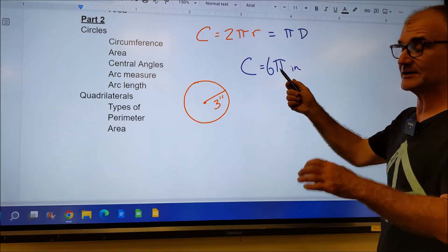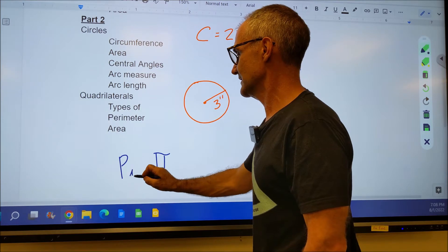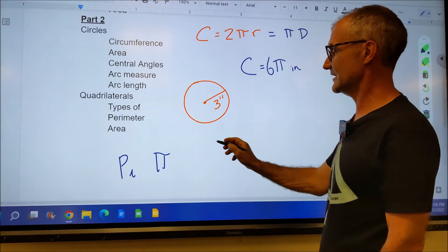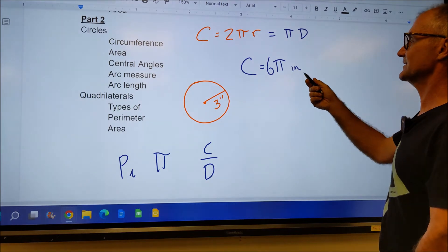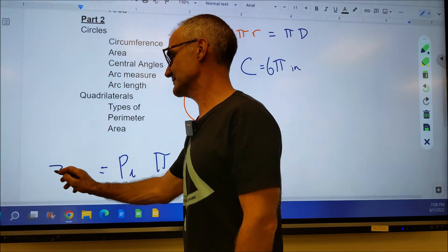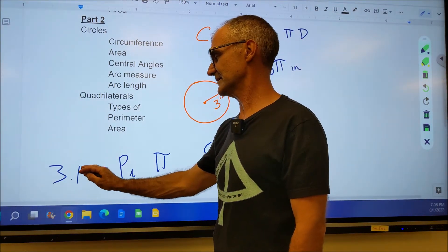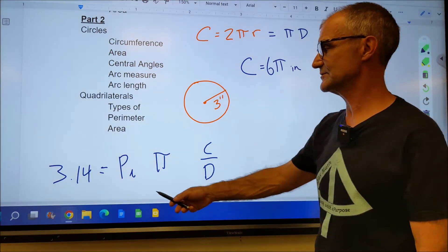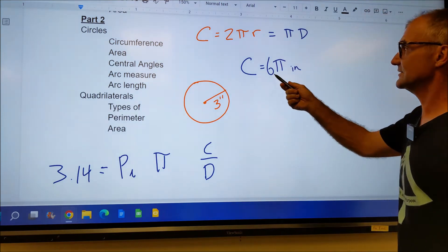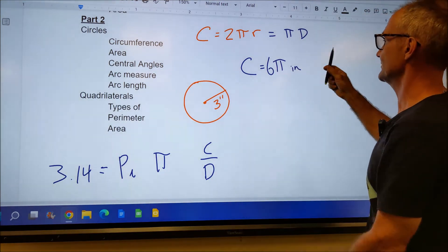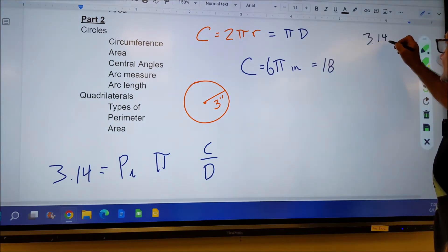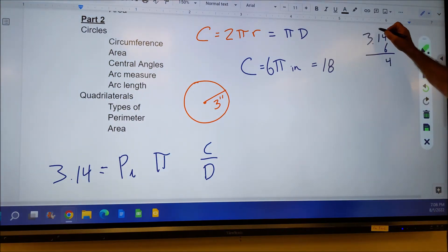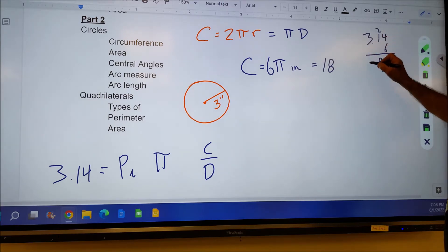This Greek letter pi represents a ratio. It is a ratio of the circumference divided by diameter. So you could leave circumference as 6 pi inches, or you might know that pi is approximately equal to 3, or if you want to get a little more exact, 3.14. Usually these are multiple choice problems, so if you're just using 3, you'll be able to figure out what it is. You could leave it as 6 pi, or do 6 times 3 to get approximately 18, or 3.14 times 6 to get 18.84.